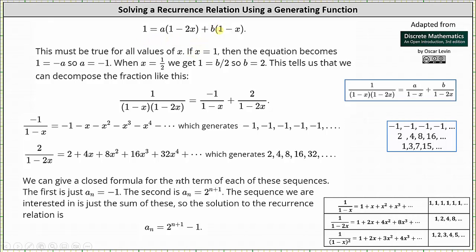For example, if we let x = 1, then (1 - x) = 0, and that term drops out. The equation simplifies to 1 = A(1 - 2), or 1 = -A, giving us A = -1. Next, notice 1 - 2x = 0 when x = 1/2. Letting x = 1/2, we get 1 = A·0 + B·(1 - 1/2) = B/2, so multiplying both sides by 2 gives B = 2.